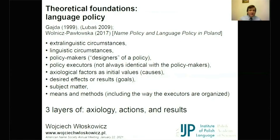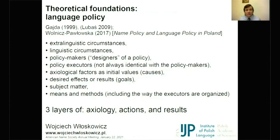These elements are: extralinguistic circumstances, linguistic circumstances, policy makers, policy executors, axiological factors of initial values, the desired effect or results, subject matter — what the policy is actually about and what is governed by a given policy — and then means and methods. Every language policy, and every name or naming policy as well, consists of three layers: the layer of axiology, actions, and results.